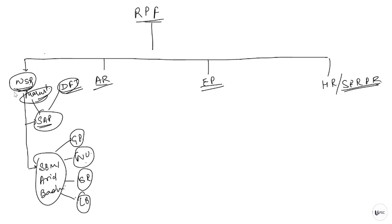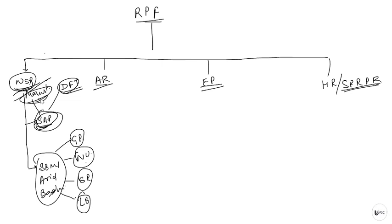So to recap: Western Sandy Plain has two parts — Sandy Arid Plain and Semi Arid Basin. Sandy Arid Plain has two sub-categories: Marusthali and Dune Free Tract. Semi Arid Basin has four sub-categories: Ghaggar Plain, Nagaur Upland, Shekhawati Region, and Luni Basin.